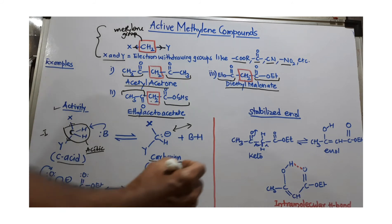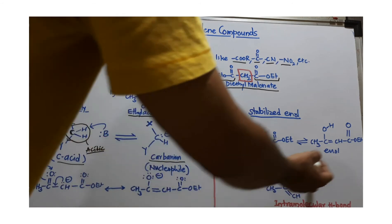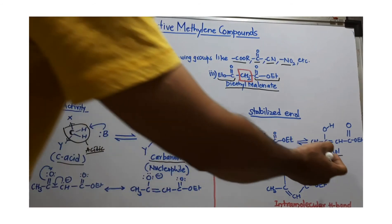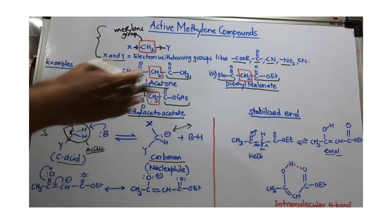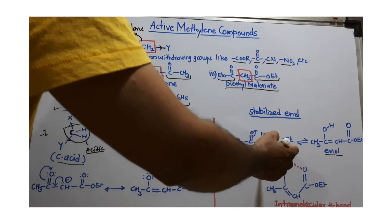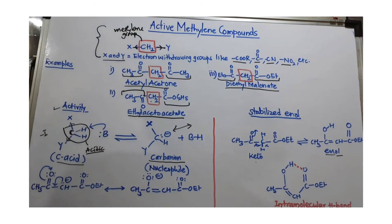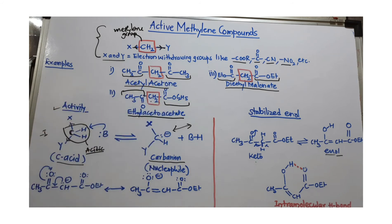Now, when any compound has a carbonyl group, it undergoes tautomerization — specifically, keto-enol tautomerization. Enol means having a carbon-carbon double bond as well as an OH group. Usually, the enol form is less stable than the keto form, so the keto form is the more favorable structure. However, the same keto-enol tautomerization is possible in active methylene compounds because they contain a carbonyl group.